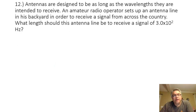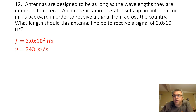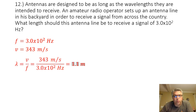Problem 12: Antennas are designed to be as long as the wavelengths they are intended to receive. An amateur radio operator sets up an antenna line in his backyard to receive a signal from across the country. What length should his antenna line be to receive a signal of 3.0 times 10 to the second hertz? The frequency is 3.0 times 10 to the second hertz. Assuming 20 degrees Celsius, wave speed is 343 meters per second. Wavelength equals velocity divided by frequency: 343 divided by 3.0 times 10 to the second gives a wavelength of 1.1 meters.